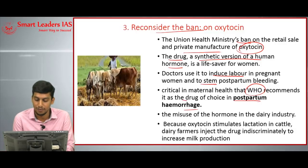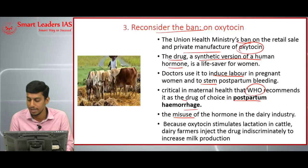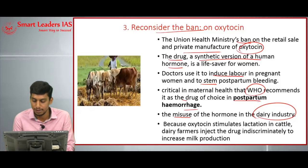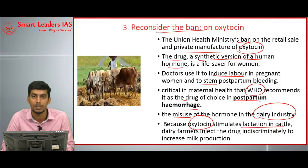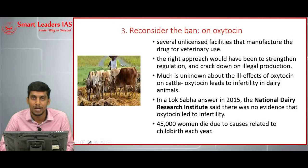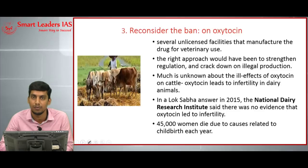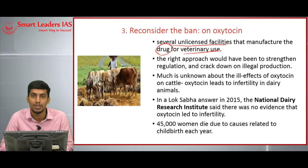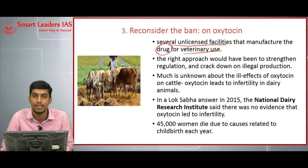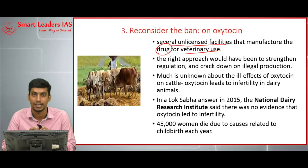But why has the government decided to ban this? Because there is widespread misuse of this drug in the dairy sector. Oxytocin stimulates lactation in cattle, so farmers are using this drug indiscriminately to enhance milk production. Several unlicensed facilities manufacturing this drug for veterinary use have to be contained, so the government is trying to ban it to avoid this indiscriminate usage.